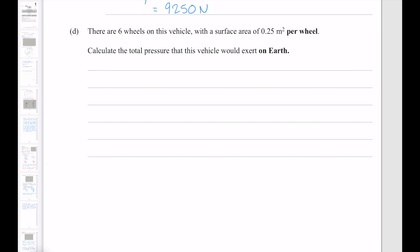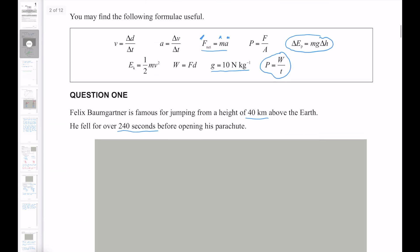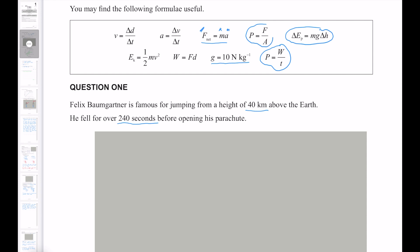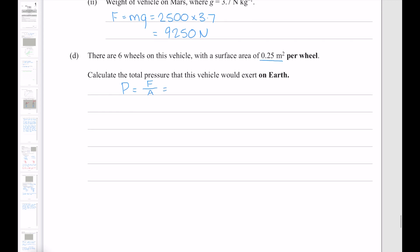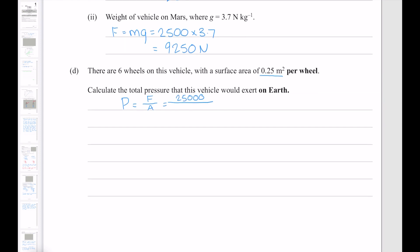There are six wheels on this vehicle with a surface area of 0.25 meter square per wheel. Calculate the total pressure that this vehicle would exert on Earth. Now the equation for pressure is force divided by area. Now the force is the force of gravity from our rover, which on Earth is 25,000 newtons. Now note that the question has asked us for the total pressure, not the pressure per wheel. Which means we need to use this area here, but multiply it by six because we have six wheels. So that gives me 16,666.666 so on, which I'll round up to 16,700. And our units of pressure are pascals.